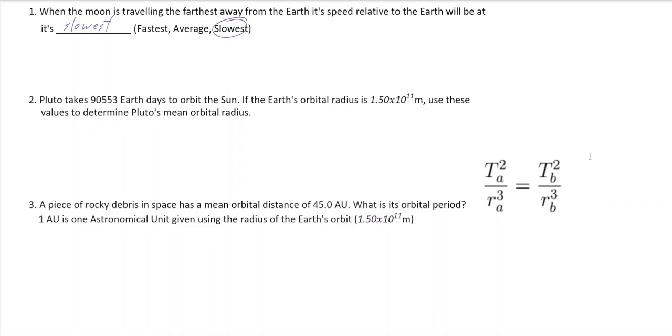Pluto takes 90,553 Earth days to orbit the sun. If the Earth's orbital radius is 1.50×10^11 m, use those values to determine Pluto's mean orbital radius. Now, I don't need to have this statement in here because you can just remember it's 1 AU, and down here I've got the definition for that. So 1 AU is an astronomical unit given using the radius of the Earth's orbit. Now, we are going to use the Earth's orbit because those are the values given, but in the second question I'm not going to.